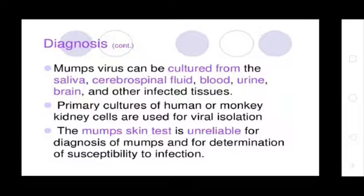Mumps virus can be cultured from the saliva, cerebrospinal fluid, blood, urine, brain, and other infected tissues. Primary cultures of human and monkey kidney cells are used for viral isolation. The mumps skin test is unreliable for diagnosis and determination of susceptibility to infection.